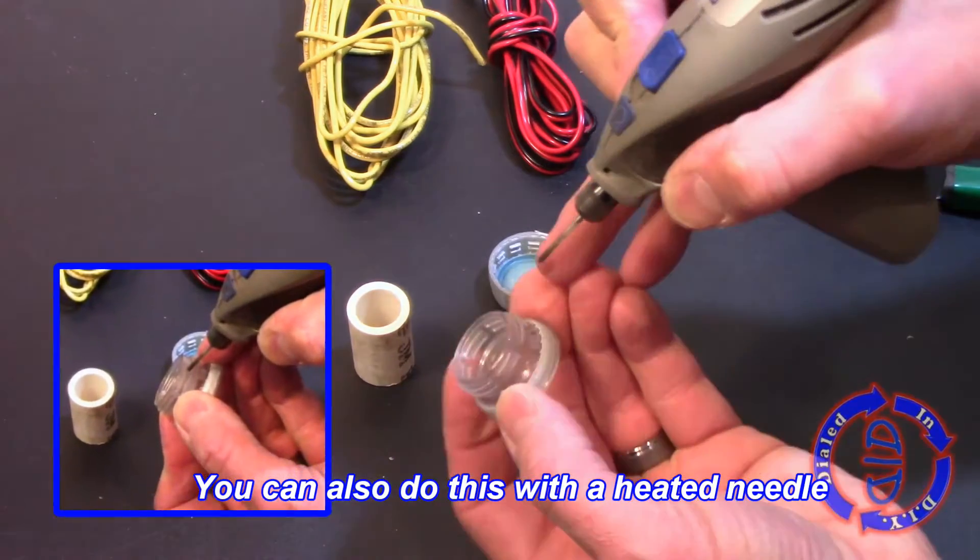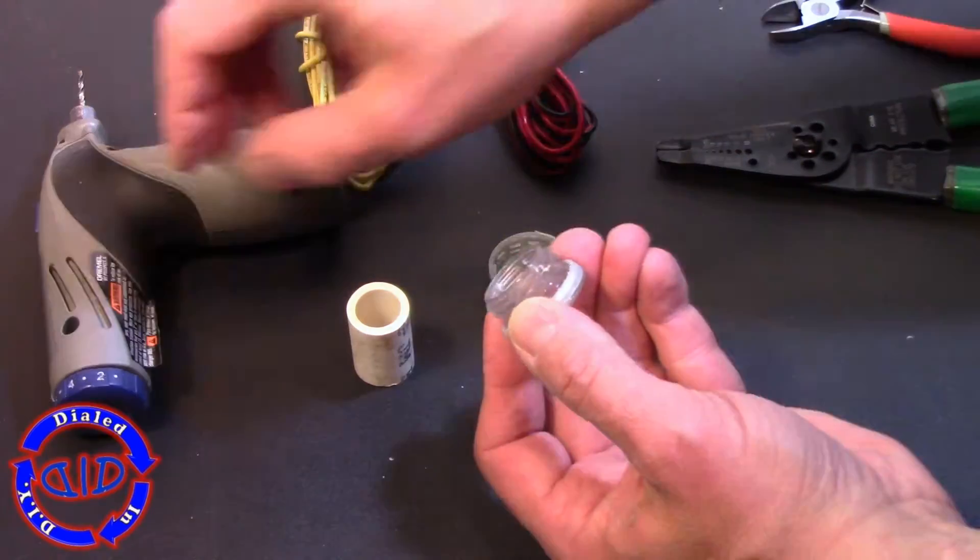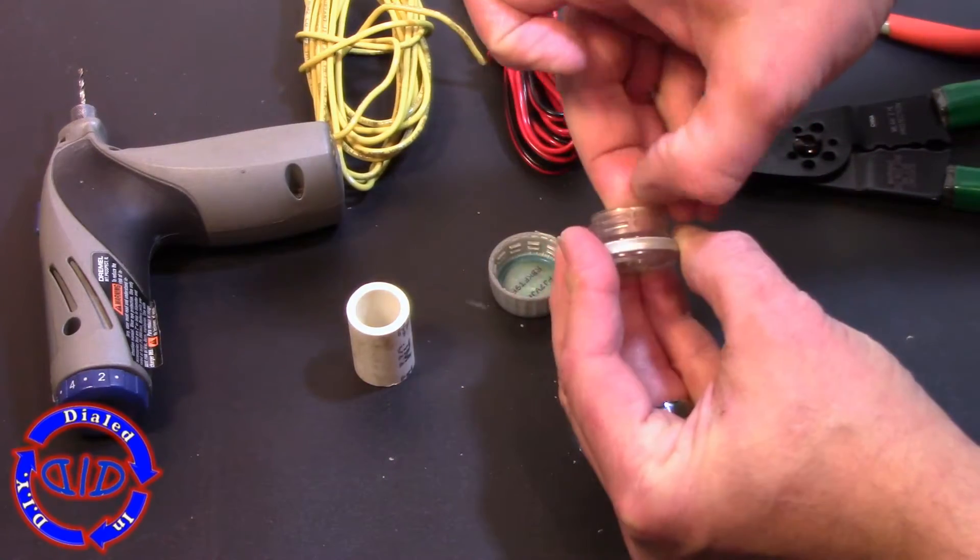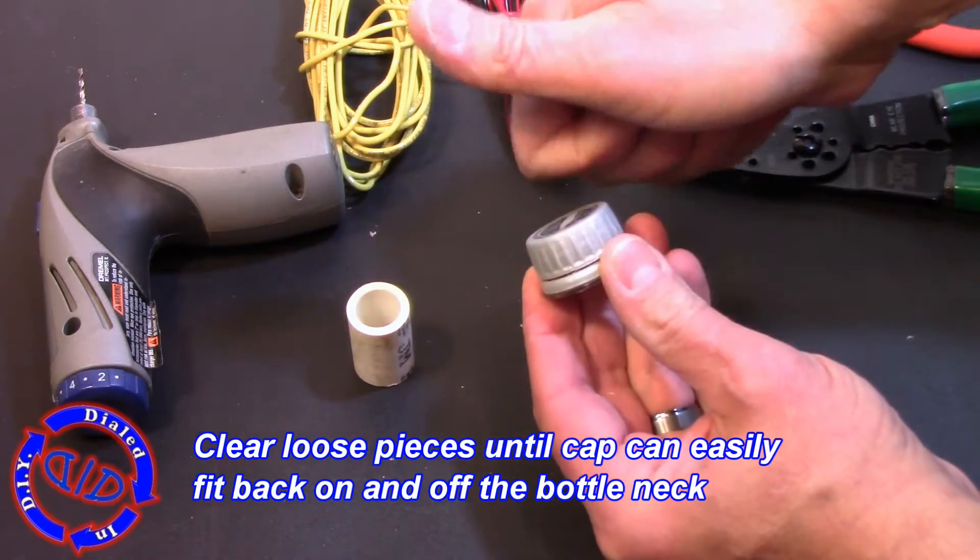The hole size doesn't have to be very precise, it just has to fit the wire through it. That's why you can even use a needle that you heat up just to melt a hole through the side, but once you're done do double check to make sure that the cap will freely slide back on and off.